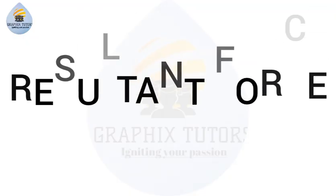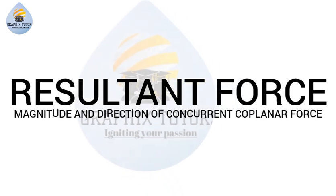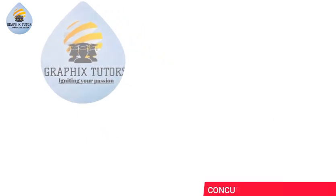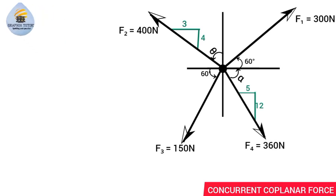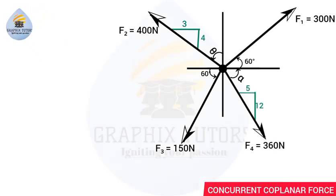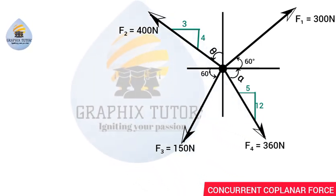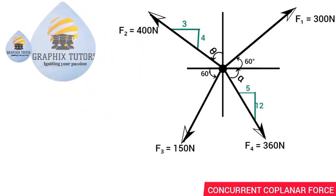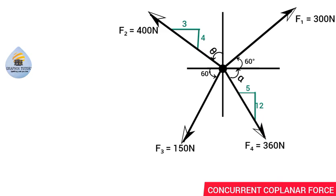My name is Graphics, and in this tutorial we are going to find the resultant force and direction of a concurrent coplanar force. The reason it is called a concurrent force is because they are all meeting at one point — the point of concurrence. It is called a coplanar force because they are all on the same plane.